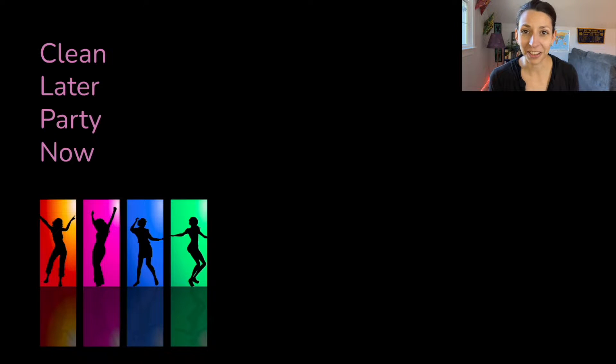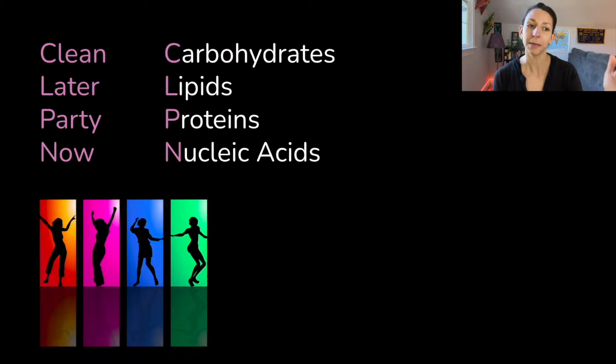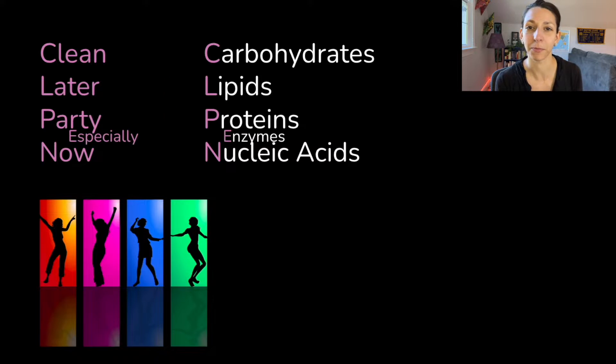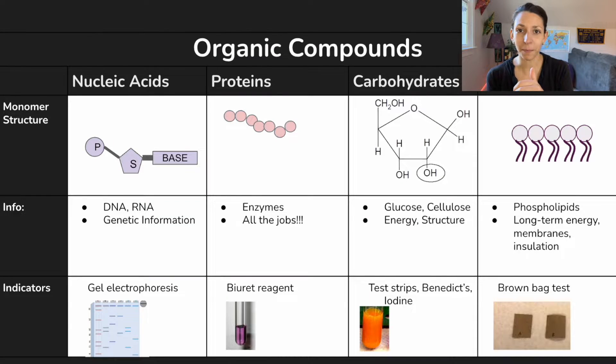But first let's get into those four categories. One way to remember it is clean later party now for carbohydrates, lipids, proteins, and nucleic acids. Students often forget that enzymes are a type of protein. So I like to include clean later party especially now so that you remember that enzymes are proteins, but they're just one type of protein. There's lots of different proteins with lots of different functions. I'm going to go through the monomers of each of our main categories of organic compounds or macromolecules, talk a little bit about their function, and then some indicators which you might use in the lab to identify each one.